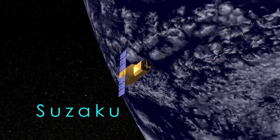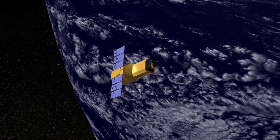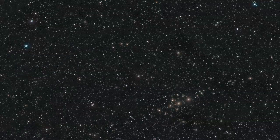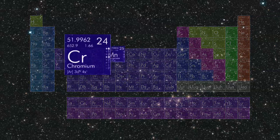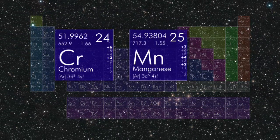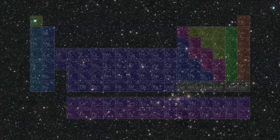Suzaku is an orbiting X-ray observatory operated jointly by NASA and the Japanese Space Agency. It recently spotted the metals chromium and manganese in intergalactic space for the first time. It's the largest known concentration of rare metals in the universe.